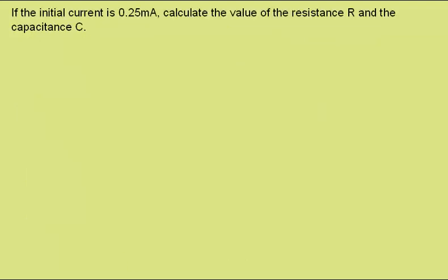If the initial current is 0.25 milliamps calculate the value of the resistance R and the capacitance C in the circuit. Well to find the resistance we can use resistance is equal to potential difference over current and putting in the values at the start not forgetting that this is milliamps 10 to the minus 3 amps gives a resistance of 36,000 ohms or 36 kilo ohms.